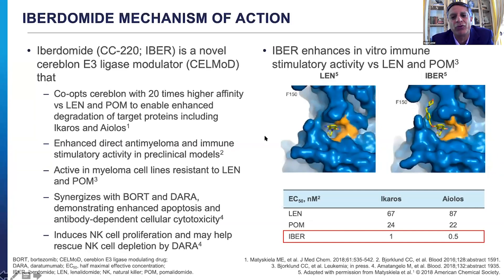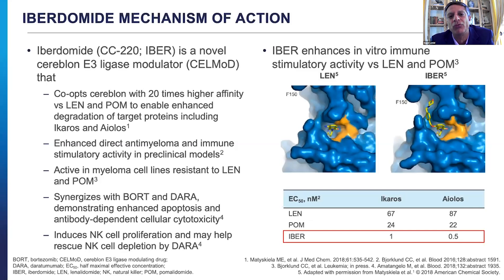The first CELMoD I want to talk about is iberdomide, also called CC-220, or just IBER for short. Unlike lenalidomide, pomalidomide, and thalidomide, CELMoDs have been engineered to have a more potent effect on the immune system — they still bind cereblon and cause direct myeloma cell death, but the impact on immune function is far greater. To give you a relative potency: lenalidomide and pomalidomide are 20 times less potent at targeting Ikaros and Aiolos than iberdomide.